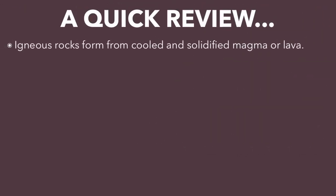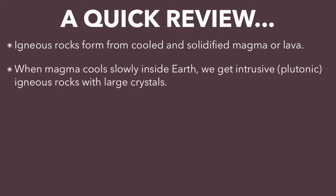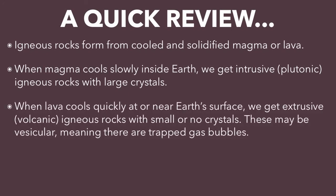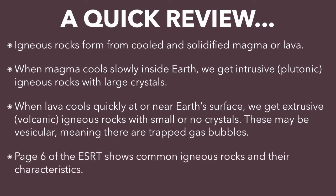Let's recap. Igneous rocks form from cooled and solidified magma or lava. When it cools slowly inside the earth, we get intrusive — sometimes called plutonic — igneous rocks, and they will have large crystals. When lava cools quickly at or near the surface, we get extrusive rocks, also called volcanic, that will have small or no crystals and may be vesicular, meaning they have trapped gas bubbles. Page six of the reference tables shows our common igneous rocks and their characteristics, and we'll be studying that chart in the coming days.